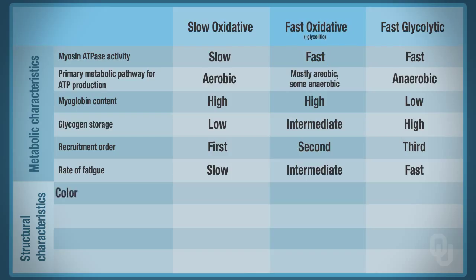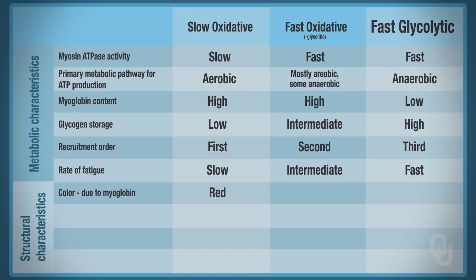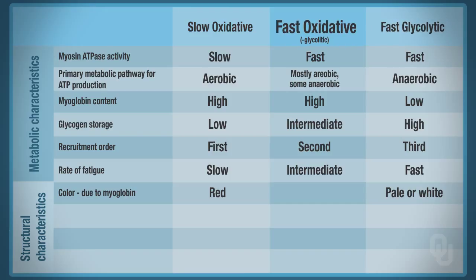The color of the muscle is due to myoglobin, which binds oxygen. In slow oxidative fibers, which have abundant myoglobin, the muscle is red. In fast glycolytic fibers, we have low myoglobin and are not storing much oxygen, so the muscle is a pale or white color. Fast oxidative is intermediate, giving it more of a pink color.